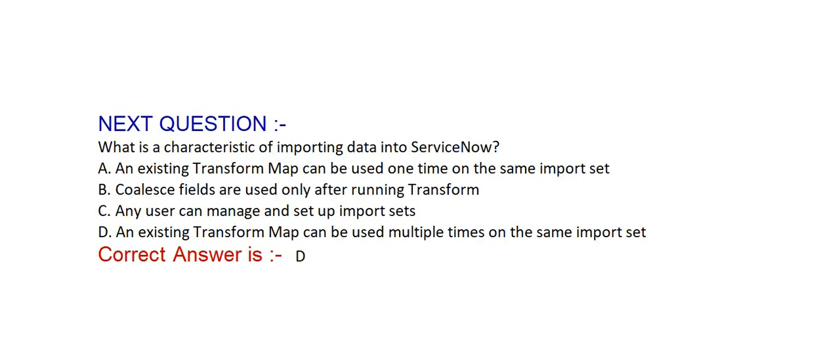Next question: What is the characteristic of importing data into ServiceNow? Option A: an existing transform map can be used one time on the same import set. Option B: coalesced fields are used only after running transform. Option C: any user can manage and set up import sets. Option D: an existing transform map can be used multiple times on the same import set. Correct answer is Option D.